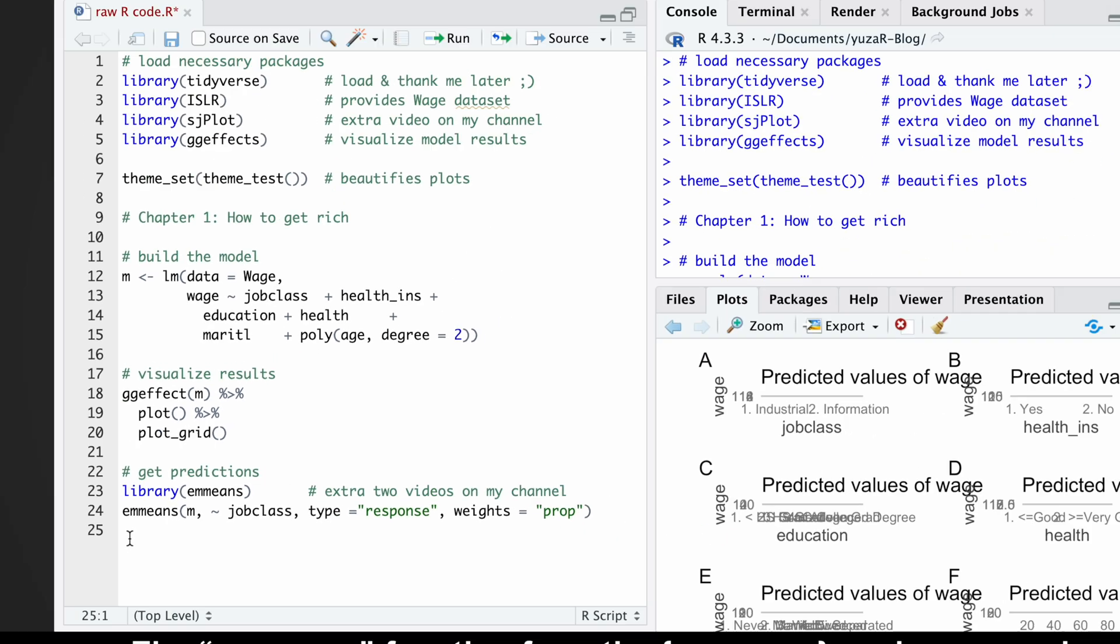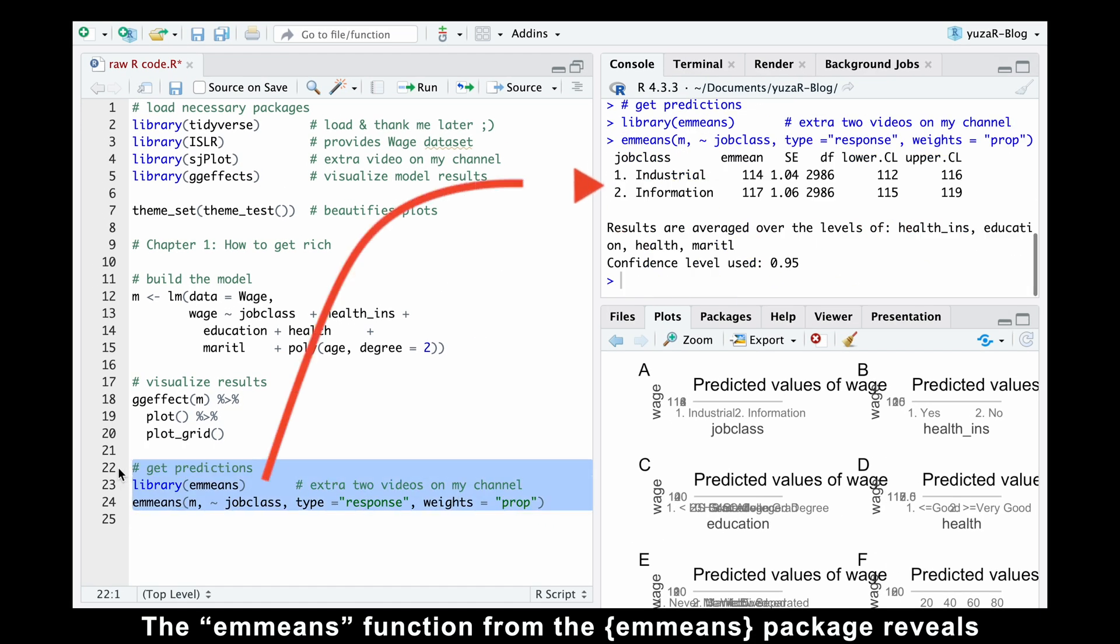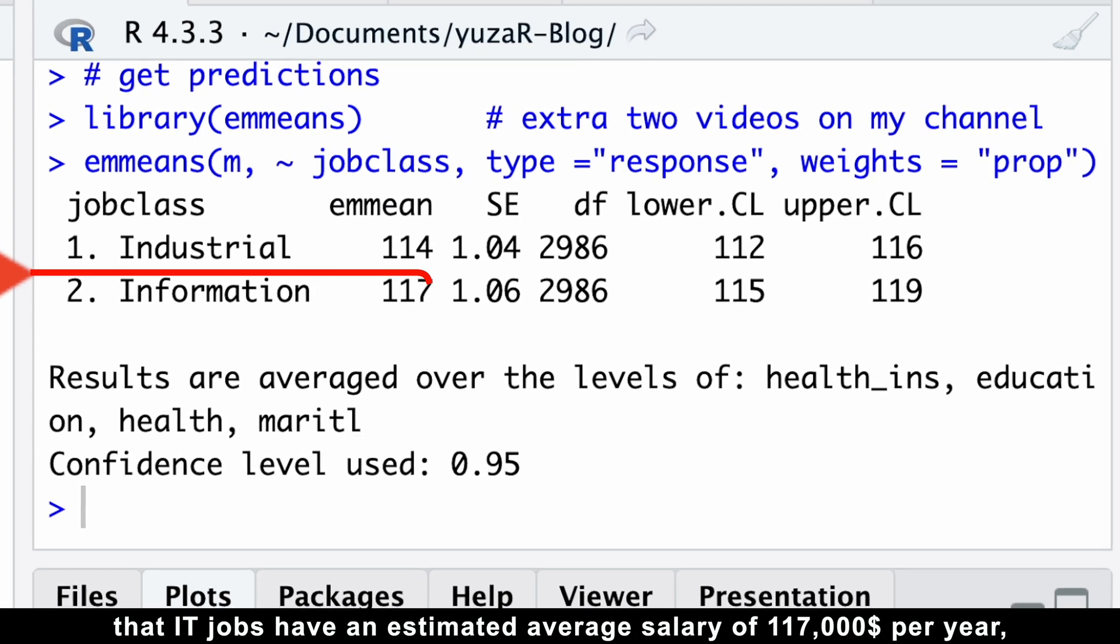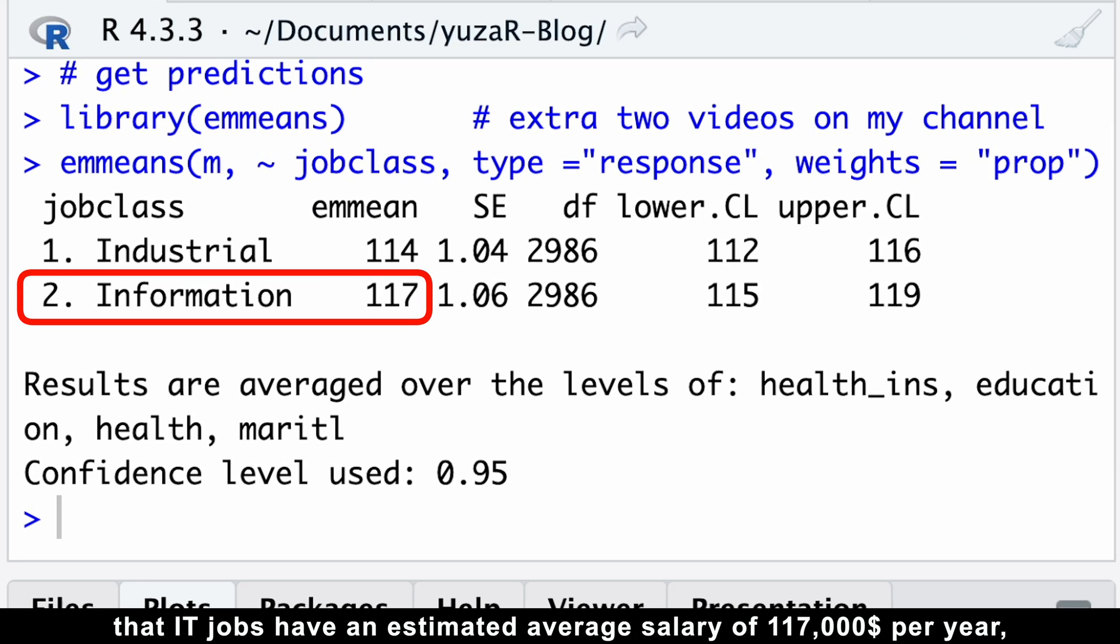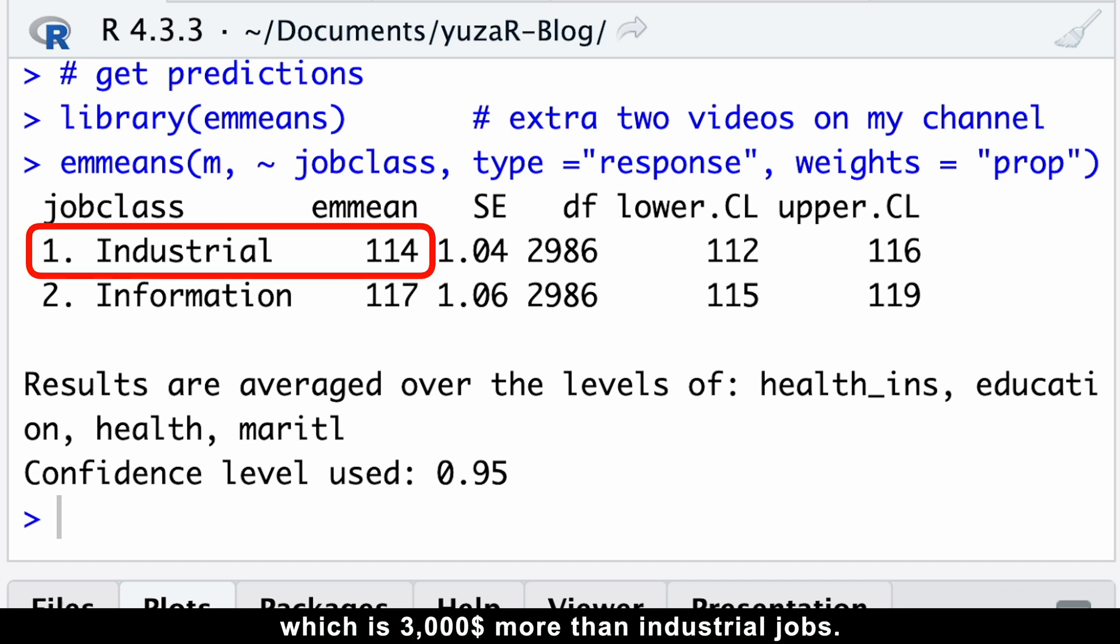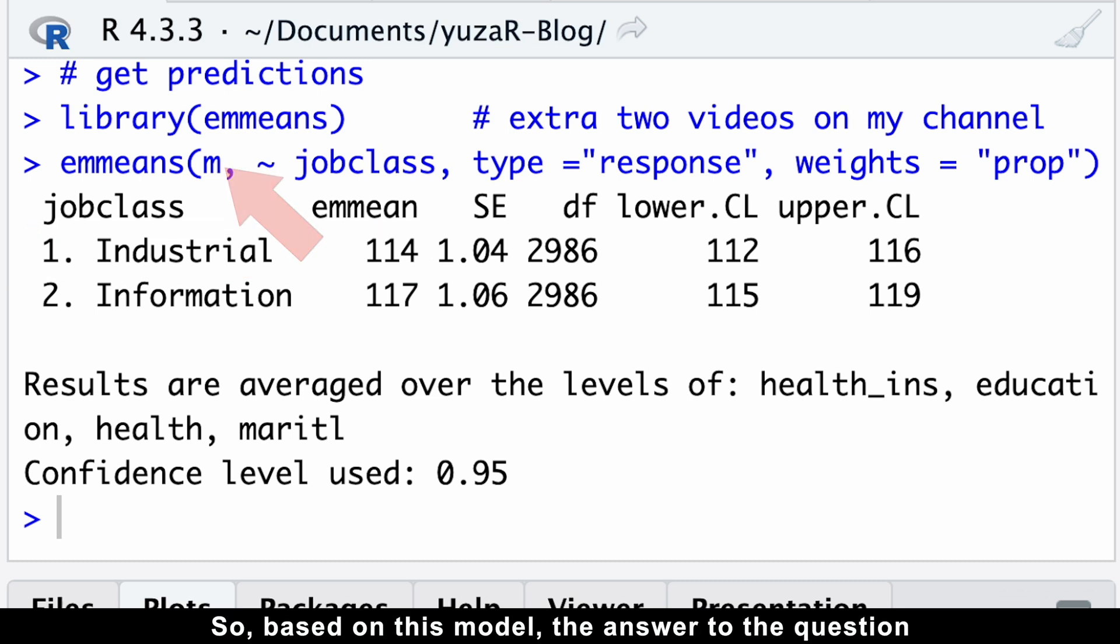The emmeans function from the emmeans package reveals that IT jobs have an estimated average salary of $117,000 per year, which is $3,000 more than industrial jobs. So, based on this model, the answer to the question what profession brings more money is IT.